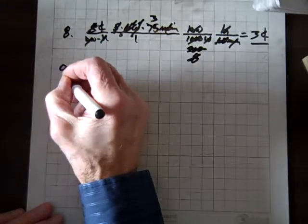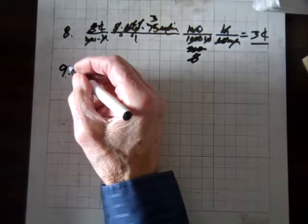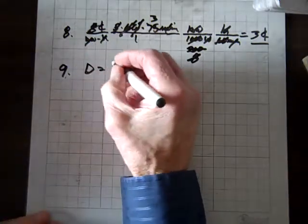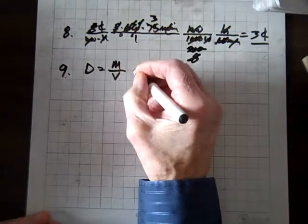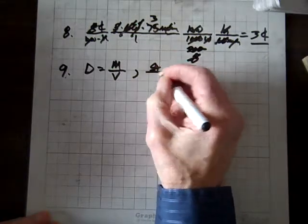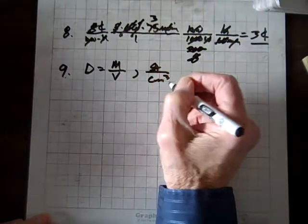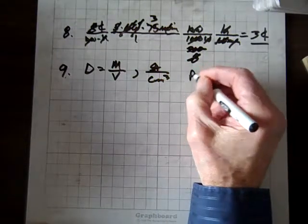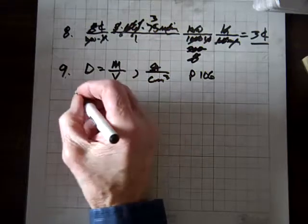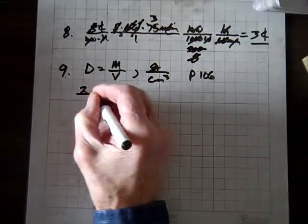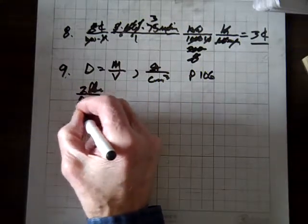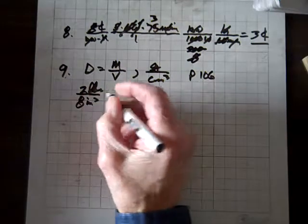Now let's do number 9. We're talking about density now, and density equals mass over volume. The units of density are going to be grams per cubic centimeter. Please refer to page 106 for this. We've got 2 pounds per 8 cubic inches.